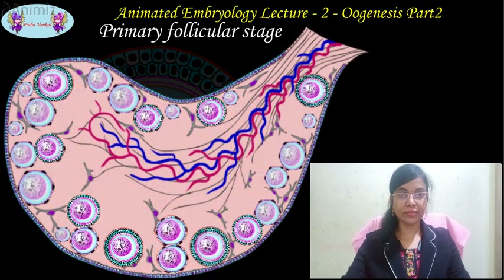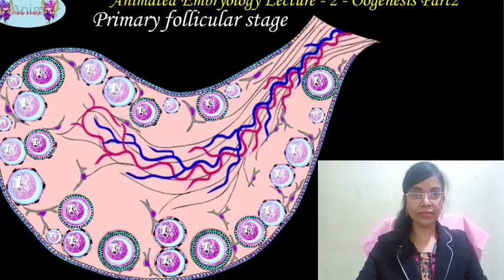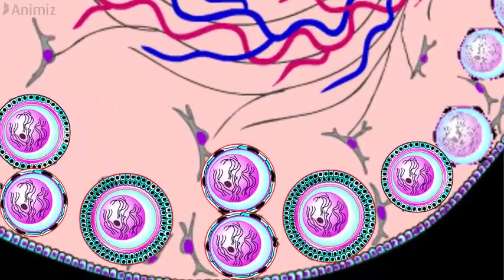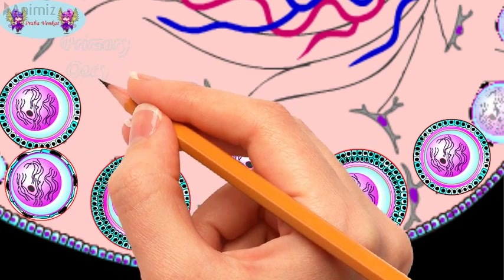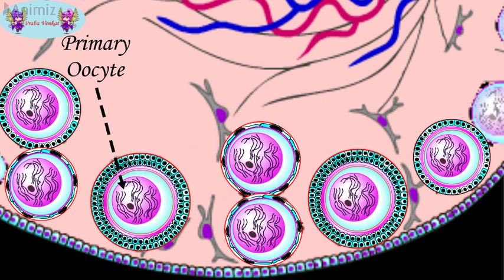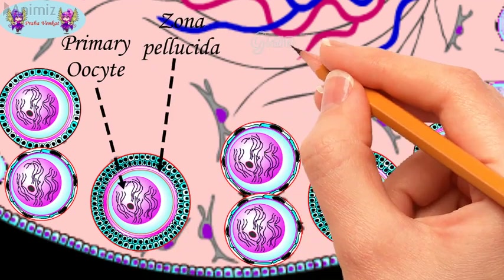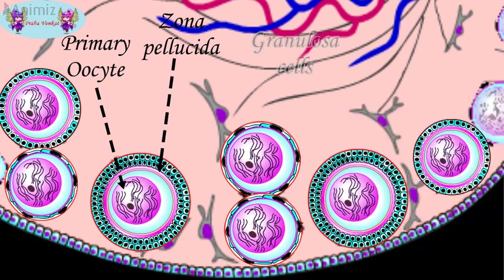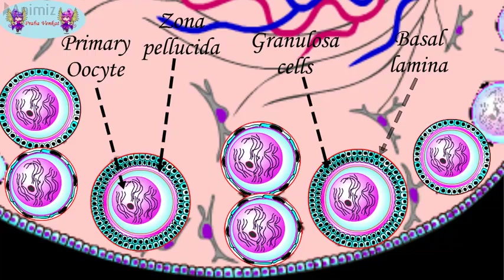On screen, you can see a lot of primary follicles in the cortical region of the ovary. Each primary follicle has a primary oocyte in the center surrounded by the zona pellucida, one or two layers of granulosa cells, and the basal lamina outside.